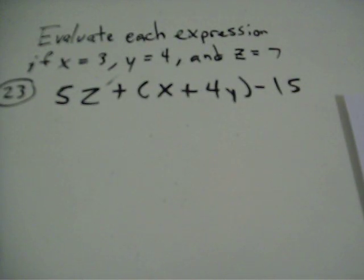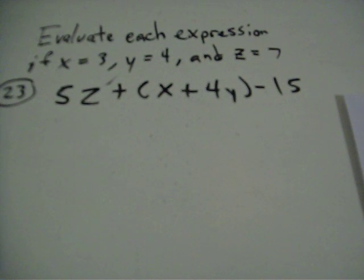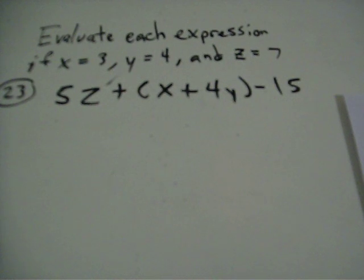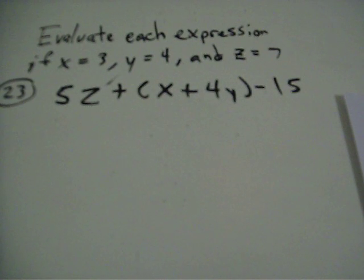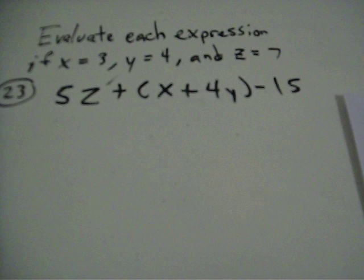The question is to evaluate each expression if x equals 3, y equals 4, and z equals 7. This is an exercise in using variables — variables are letters that are in the place of numbers. Sometimes a variable can be any number or a set of a few numbers. In this case, each variable is an exact number.